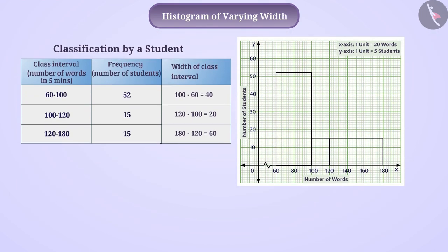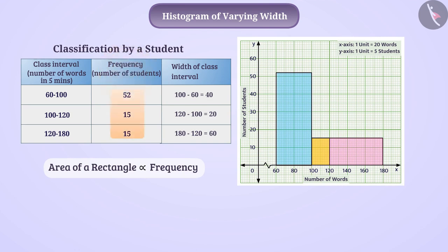We know that the area of a rectangle in a histogram is proportional to the frequency it represents. According to this, the area of each rectangle here should be proportional to the frequency. Since the frequencies of the class interval 100 to 120 and the class interval 120 to 180 are the same, the area of the rectangles representing them should also be the same. But the area of both appears different here. We can also understand it mathematically.